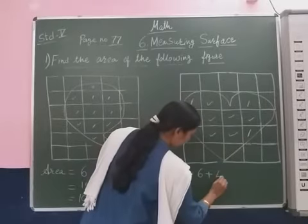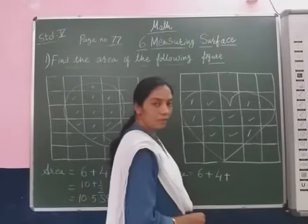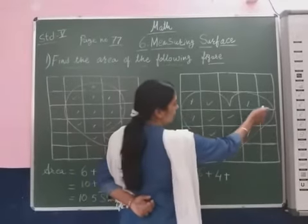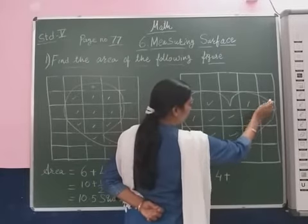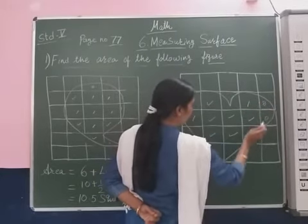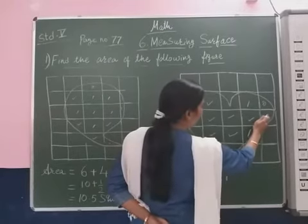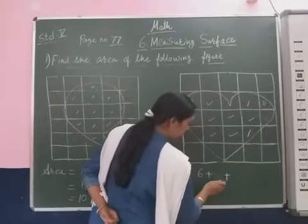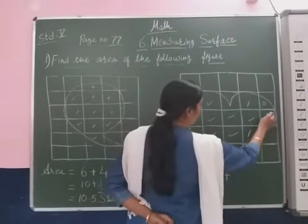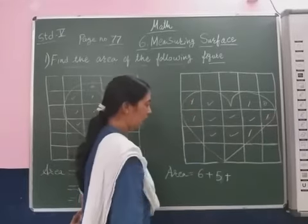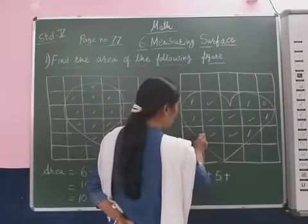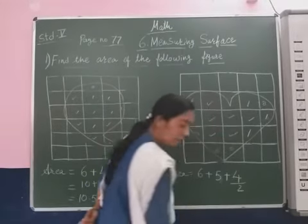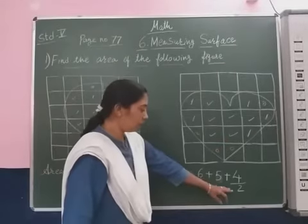Plus half of the square. Here it is a little bit half that we consider this area, then this area, then this area. This square also greater than half, so we consider here one more that we calculate here, that's five. So half of the square, so we write here 4 by 2.